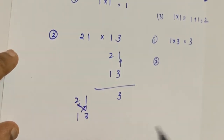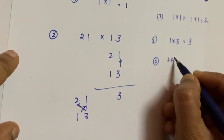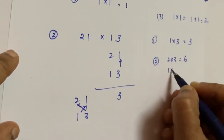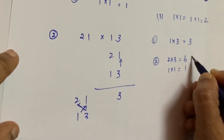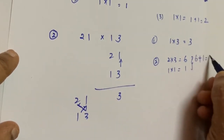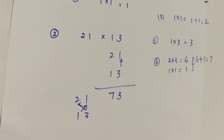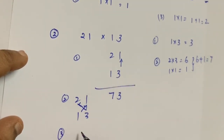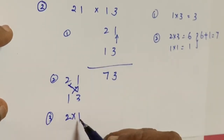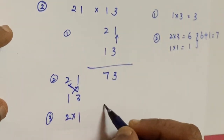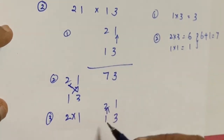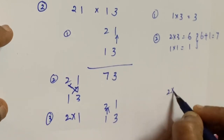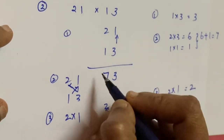The second step — cross-multiplying: 2 into 3 equals 6, and 1 into 1 equals 1. So 6 plus 1 equals 7; write 7 here. The third step is to multiply the tens place digits: 2 into 1 equals 2. Write 2 here. So 21 multiplied by 13 gives us 273.